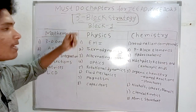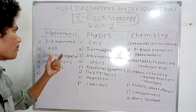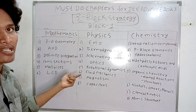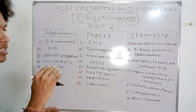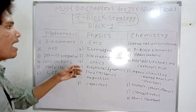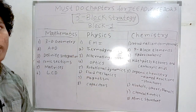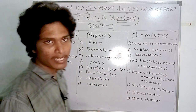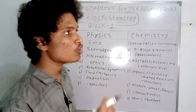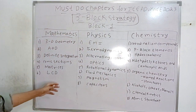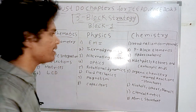These chapters are ranked by weightage — the highest-weighted chapters are in block one, and the least-weighted chapters are in block two and block three. We have to move in this order based on the past five to six years of JEE Advanced weightage data.